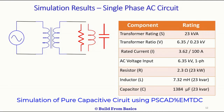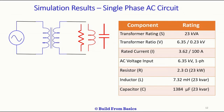Let's take a single-phase supply of 11 kV line voltage, giving a phase voltage of 6.35 kV. We take a transformer of 23 kVA with a ratio of 6.35 kV on the primary and 230 V on the secondary. The rated current in the primary is then 3.62 amperes and in the secondary is 100 amperes. Now let's calculate the resistor, inductor, and capacitor values using the relevant formulas.